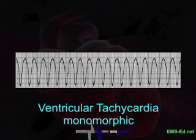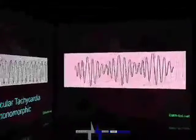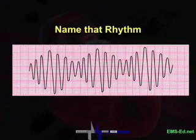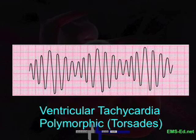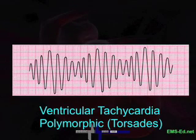Let's look at something similar, but not exactly the same. This looks like the last strip in two respects: it's fast and it's wide. But they're not all the same shape — V-tach, but polymorphic. Many shapes, not one. It typically occurs in non-sustained bursts, and we see prolonged QT intervals during breaks in the rhythm. This is not to be treated as standard V-tach. Slow administration of magnesium sulfate, one to two grams, or 150 milligrams of amiodarone may be recommended.